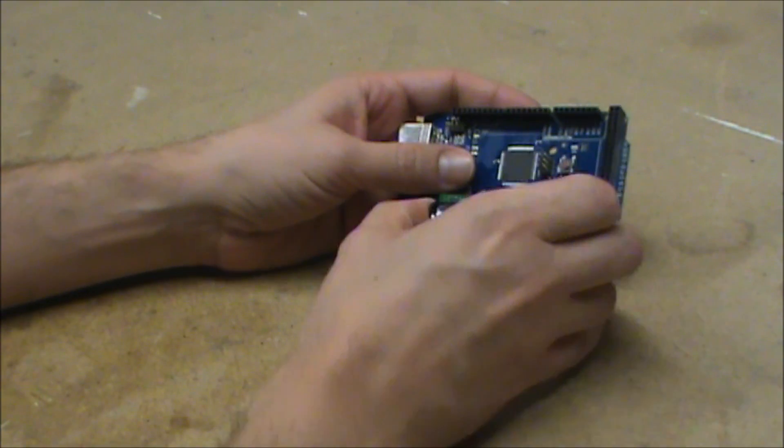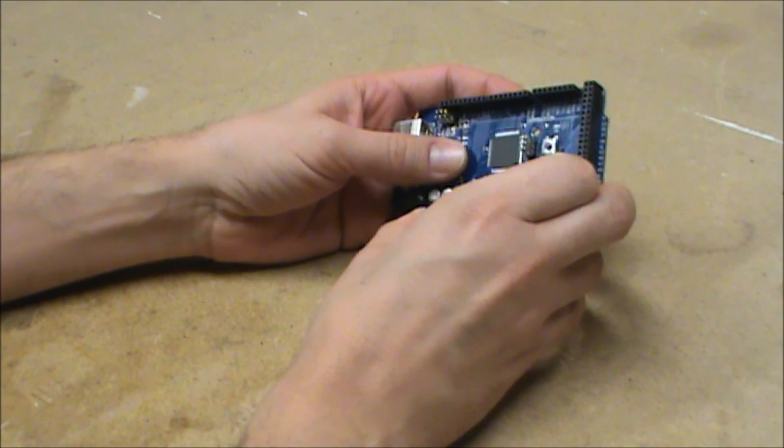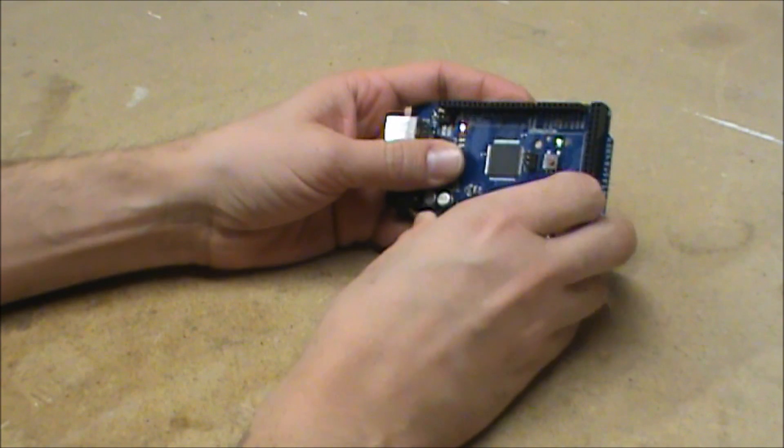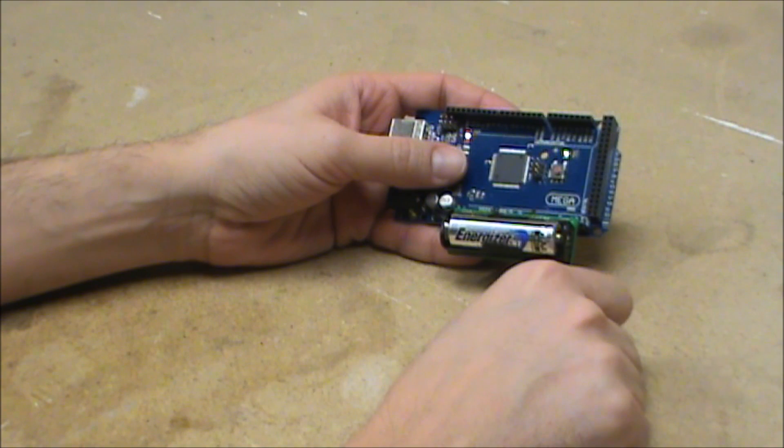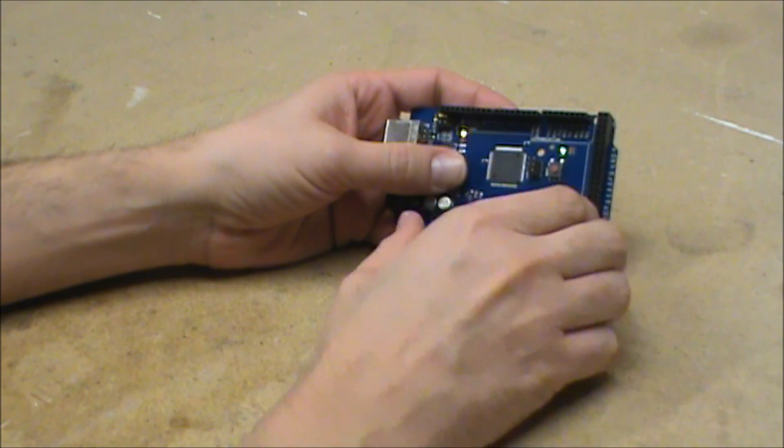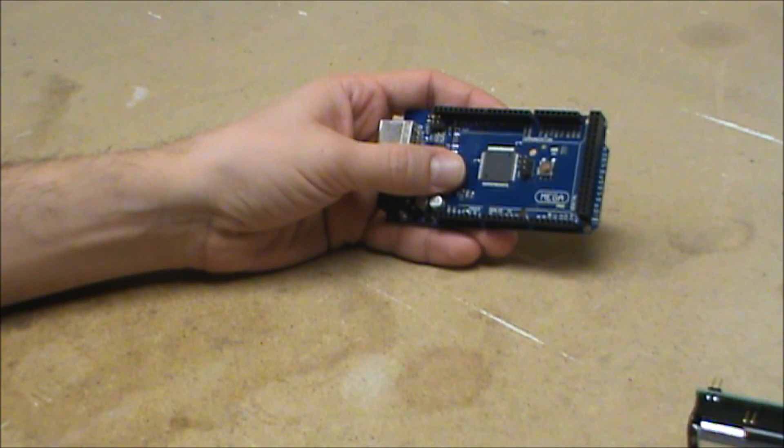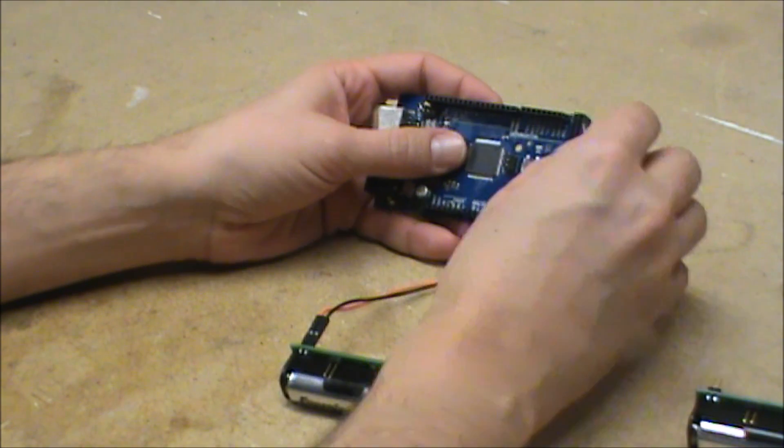You can also plug it straight into an Arduino. This is plugged into a 2560, and it's going to provide the voltage that's required right into the input. If that doesn't work, you can even add jumper wires and jump to the points that you need.